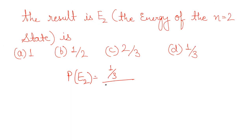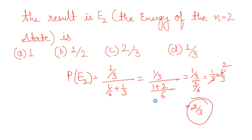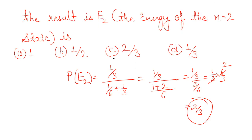The probability of finding energy E2 is the square of the coefficient of the favourable state divided by the sum of squares of the remaining coefficients. This gives 1/3 divided by (1/6 + 1/3). Taking LCM: 1/3 divided by 3/6 = 1/3 divided by 1/2, which simplifies to 2/3. So the probability is 2/3, which is option C.